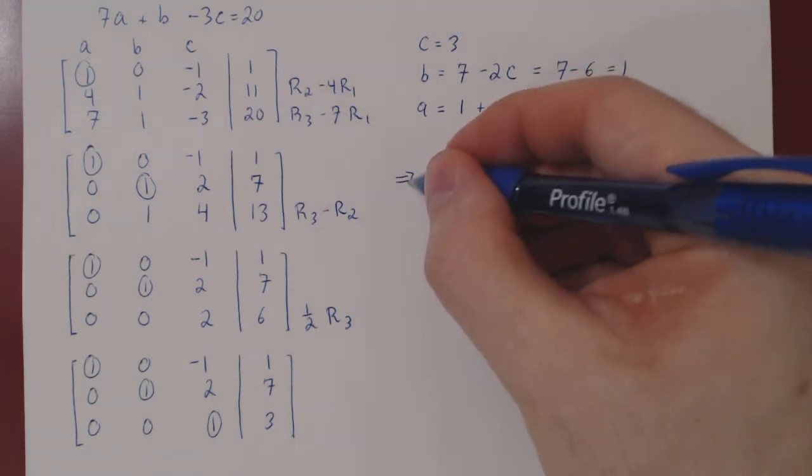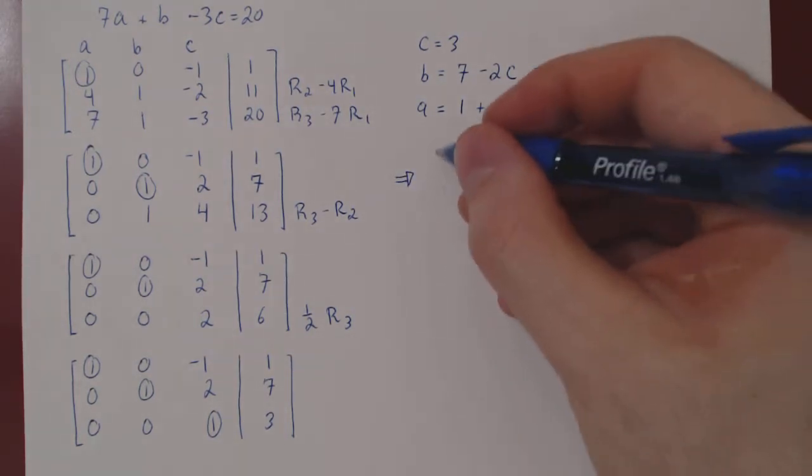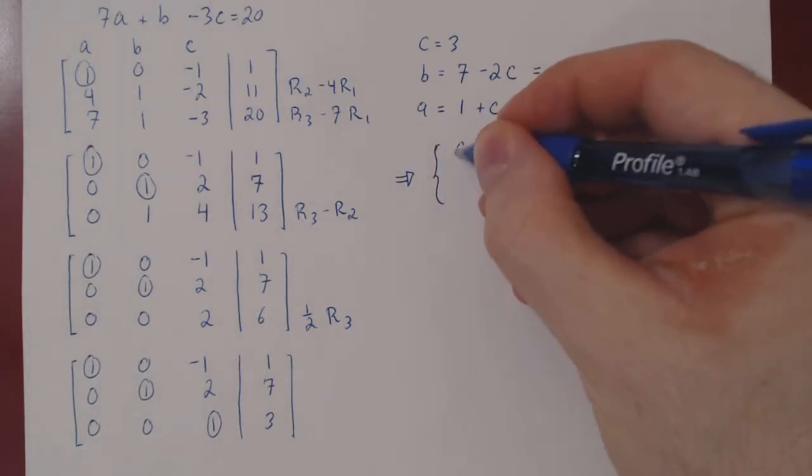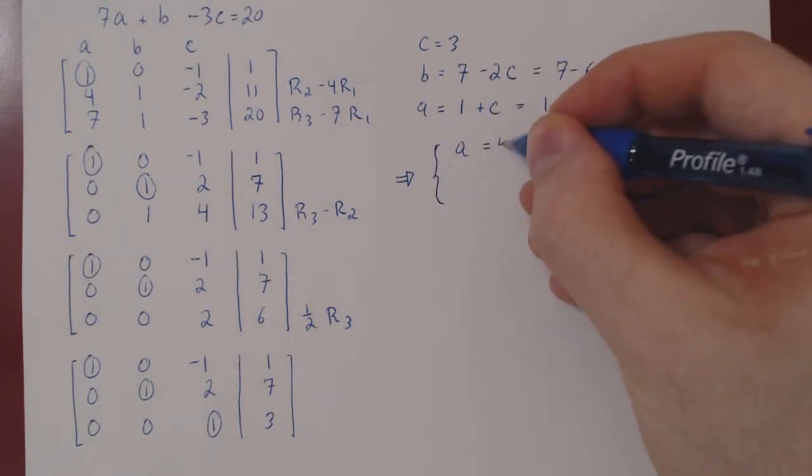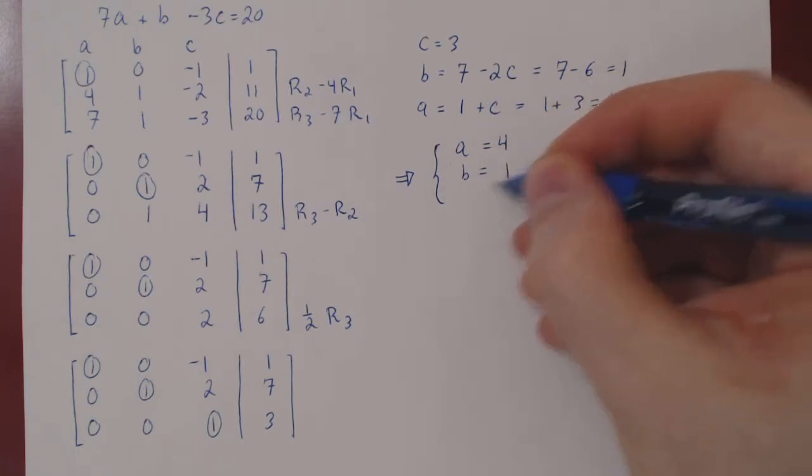And so we can now write in the right order our final answer. The unique solution is a equals 4, b equals 1, and c equals 3.